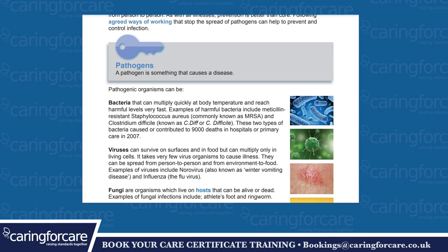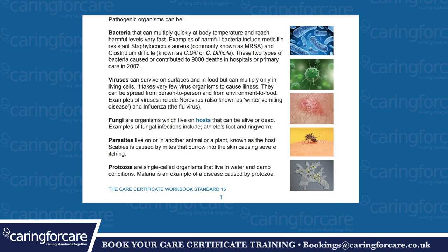A pathogen is something that causes a disease. Pathogenic organisms can be bacteria, which can multiply quickly at body temperature and reach harmful levels very fast. Examples of harmful bacteria include MRSA and C. diff. These two types of bacteria caused or contributed to 9,000 deaths in hospital or primary care in 2007. Viruses can survive on surfaces and in food but can multiply only in living cells. It takes very few virus organisms to cause illness. They can be spread from person to person and from environment to food.